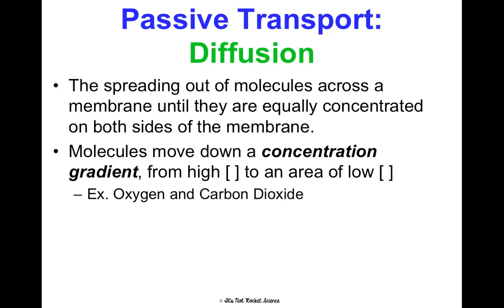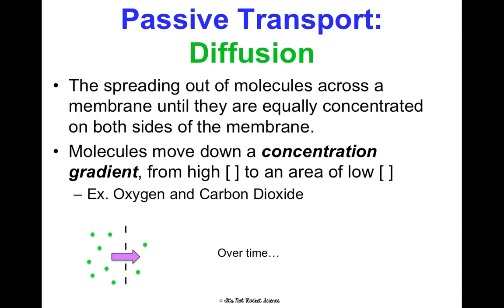A real-world example of diffusion: when someone makes bacon or chocolate chip cookies, the smell is strongly concentrated in the kitchen. But over time, it naturally diffuses through the house until the whole house smells a little like bacon. In a diagram, we represent the cell membrane as a dotted line. With more solute on one side (higher concentration) and less on the other, diffusion causes molecules to move toward the lower-concentration side until balanced.